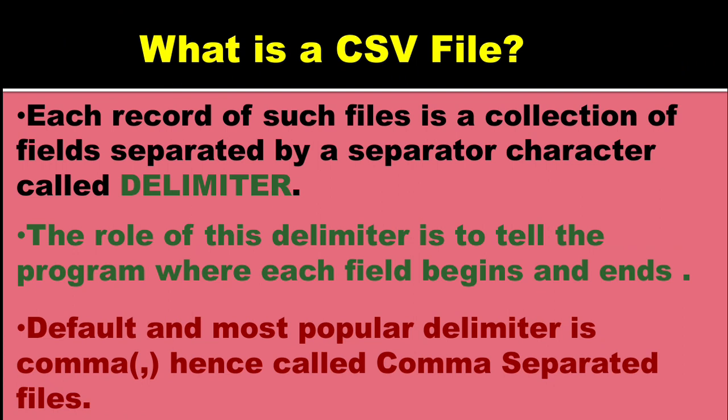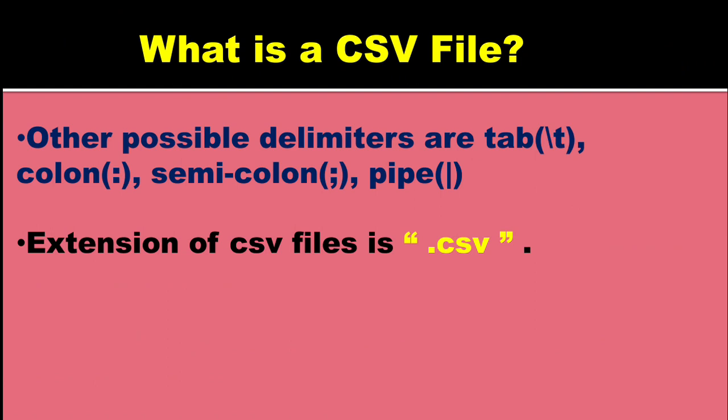The most popular delimiter for a CSV file is comma, and it is the default delimiter of such files — hence it is called comma separated values file. But there are other possible delimiters also, like tab, colon, semicolon, and single pipe sign. You can use these delimiters as per your requirement, but the most common one is comma. The extension of such files is kept as .csv.